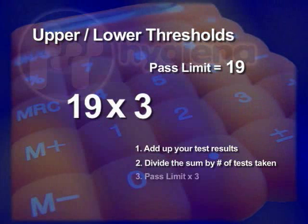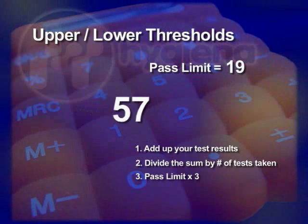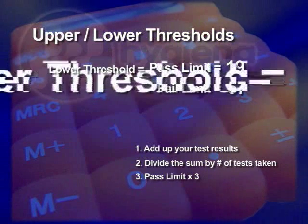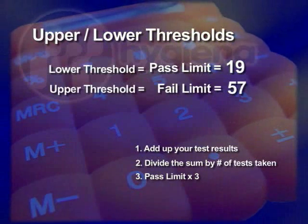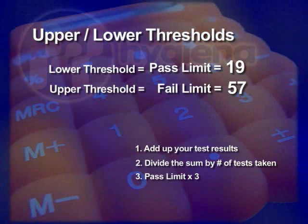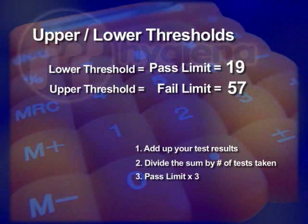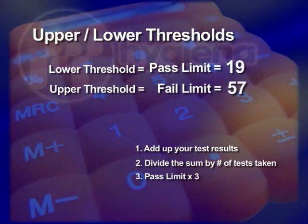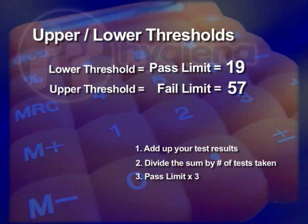Next, multiply your pass limit by 3. This will give you your fail limit. These are your thresholds. You can now enter them into your System Sure Plus program and synchronize to your device, or enter them directly into your Luminometer under the threshold category. Any test number falling in between these two numbers should be considered as a caution zone.